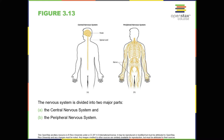The peripheral nervous system has two major subdivisions. The somatic nervous system is associated with activities traditionally thought of as conscious or voluntary. It's involved in the relay of sensory and motor information to and from the central nervous system; therefore it consists of motor neurons and sensory neurons.